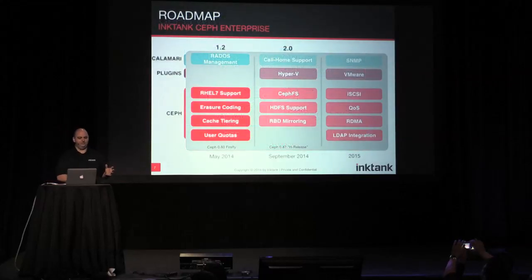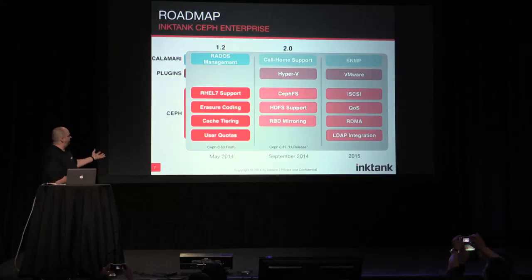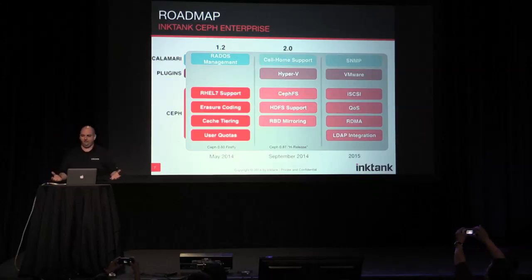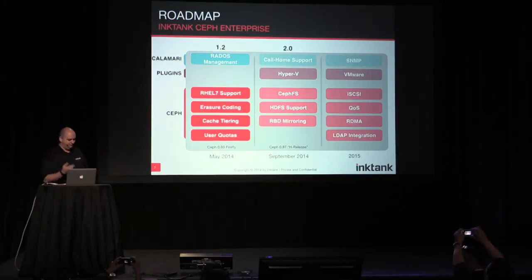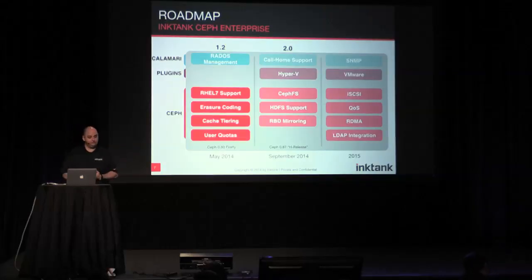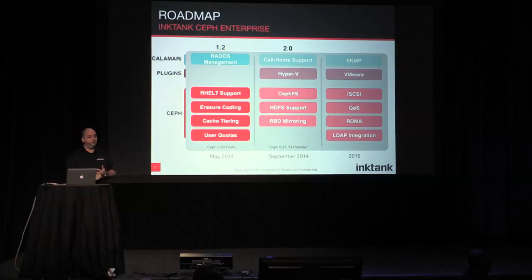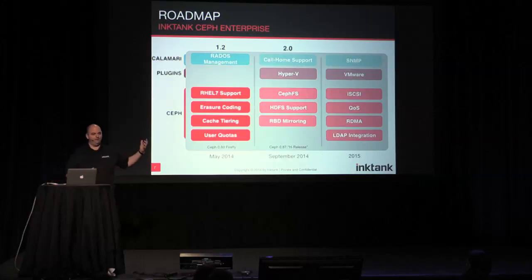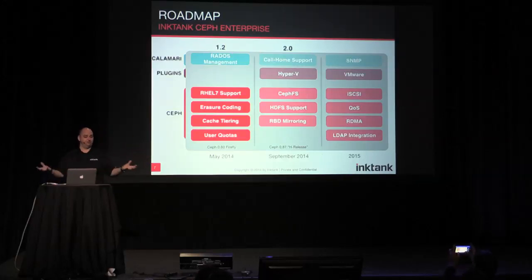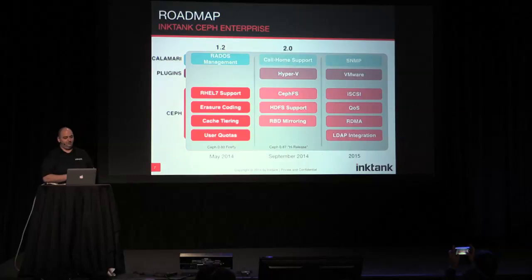A little bit about Ceph's roadmap. Ink Tank Ceph Enterprise 1.2 is about to come out in a couple of weeks. What it brings is support for RHEL 7, which is a big deal, two features I'll talk about in more detail — erasure coding and cache tiering — and some additional quotas. On the Calamari side — Calamari is the management console for Ceph — we're introducing more management features.